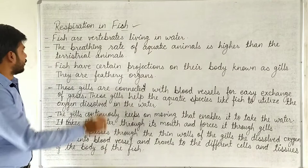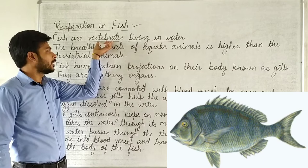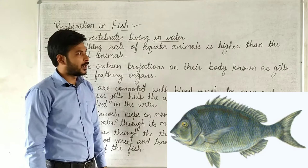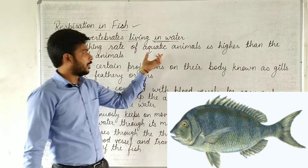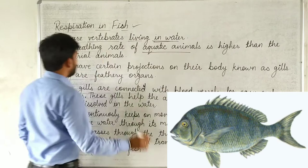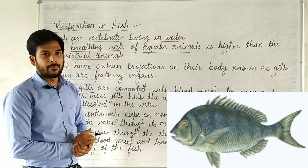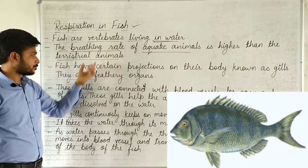Next topic is respiration in fish. Fish are vertebrates — vertebrates are organisms that have a backbone, unlike invertebrates. The breathing rate of aquatic animals is higher than that of terrestrial animals, because the oxygen level in water is lower compared to land.